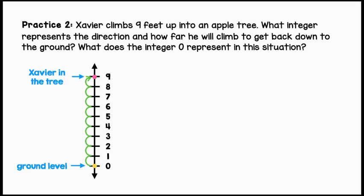Let's use an equation to represent this situation. Nine, which is Xavier's position in the tree, combined with an unknown value, is going to bring us back down to ground level. Let's count how many spaces we need to move down to get to ground level. That is nine spaces.